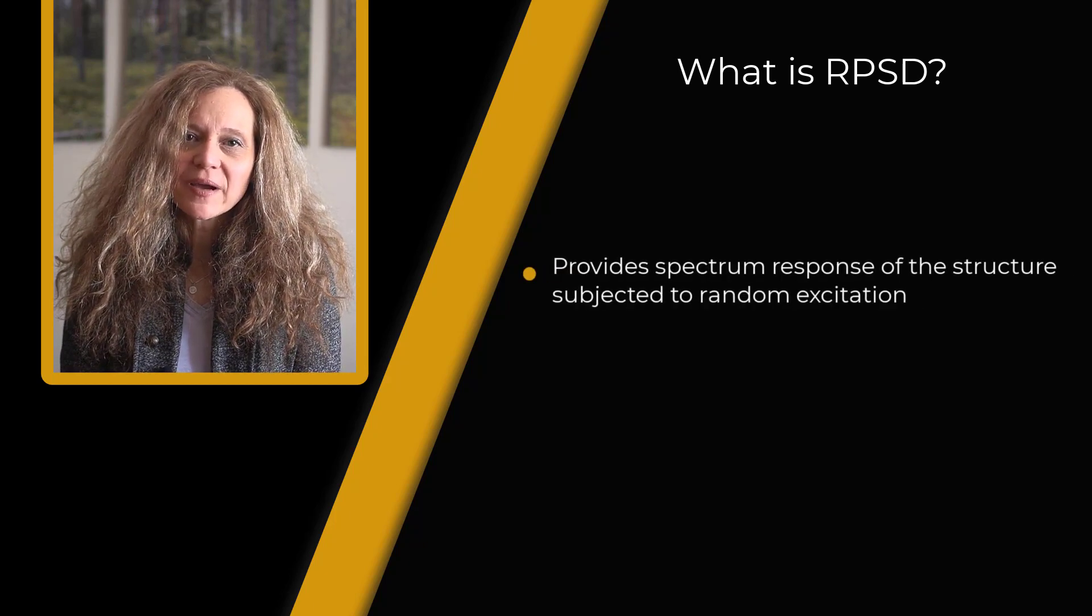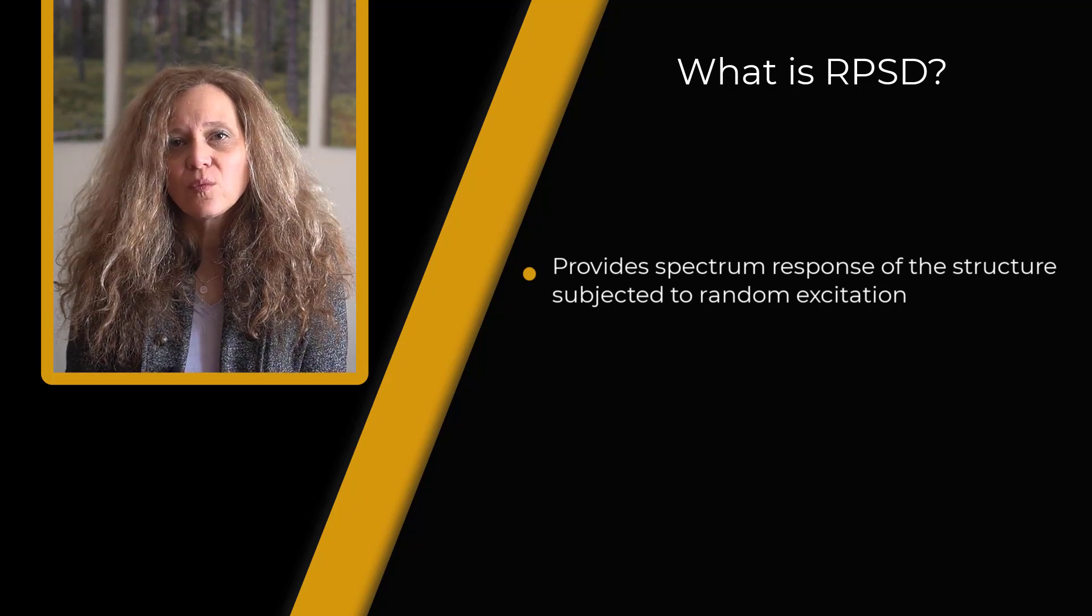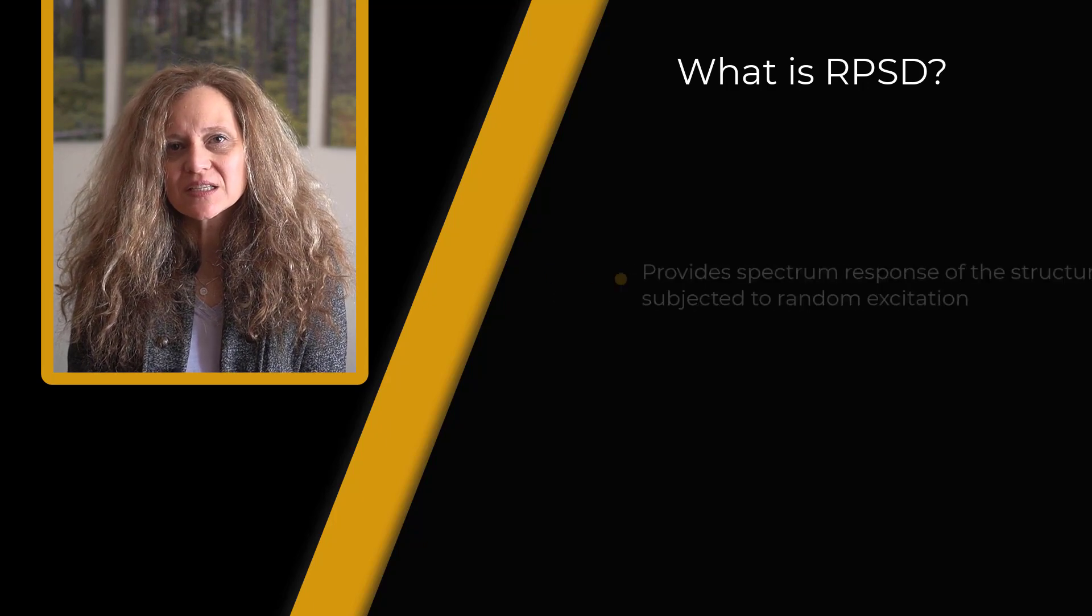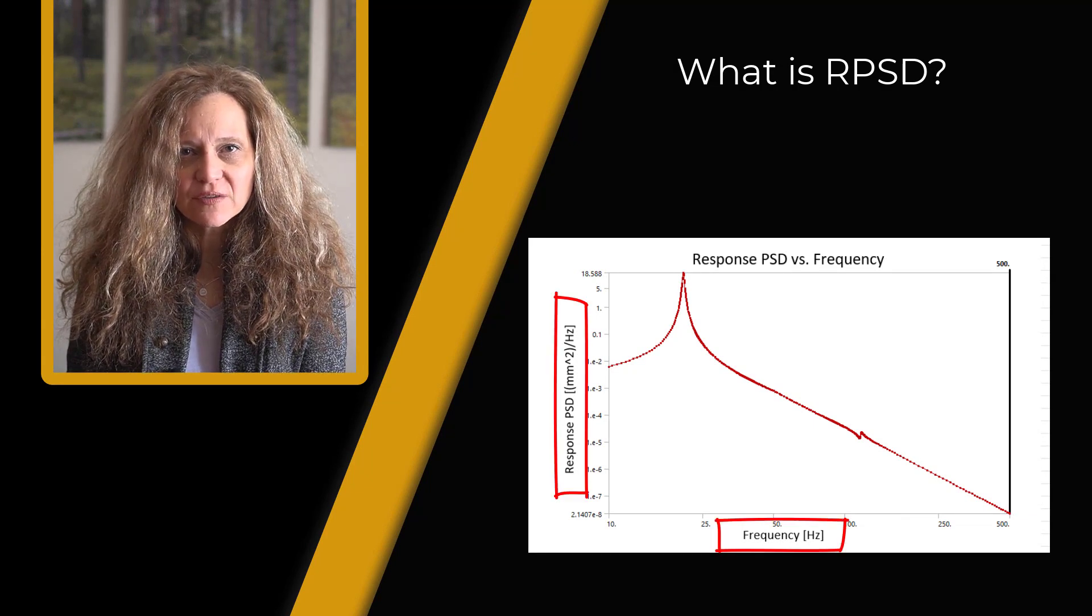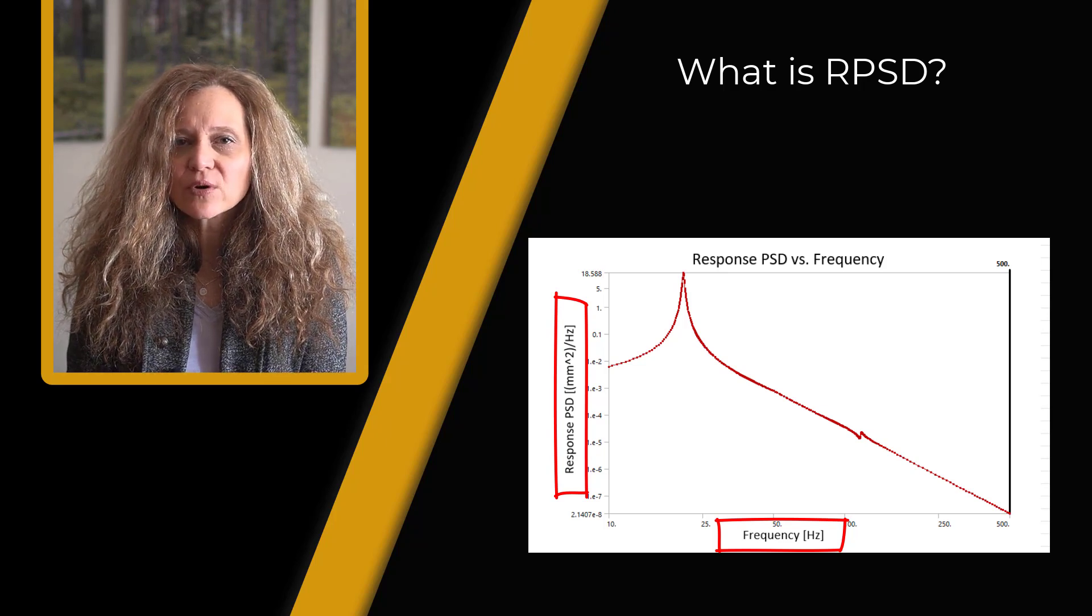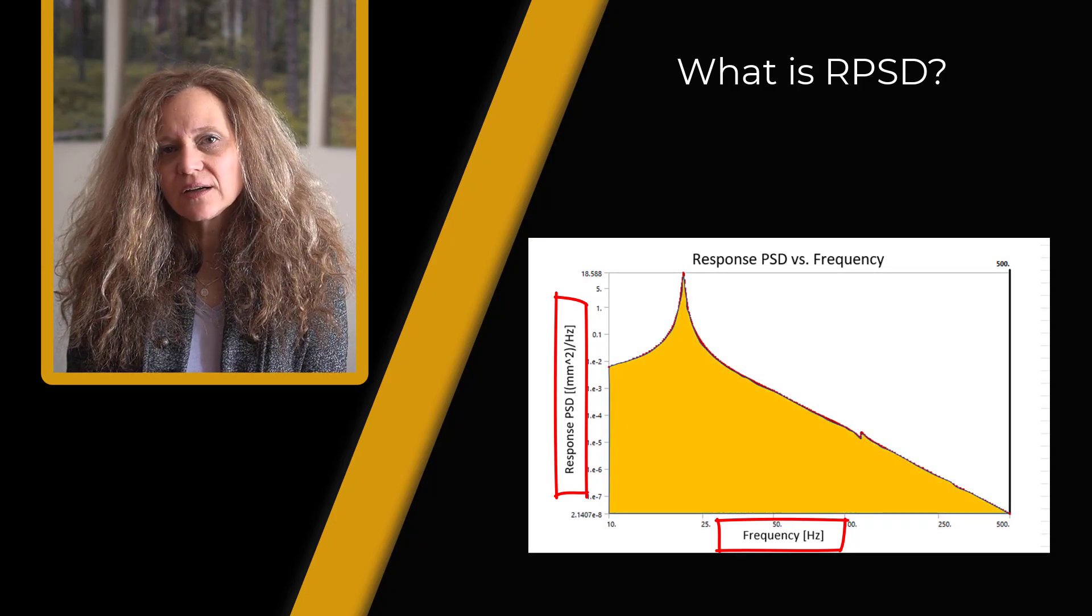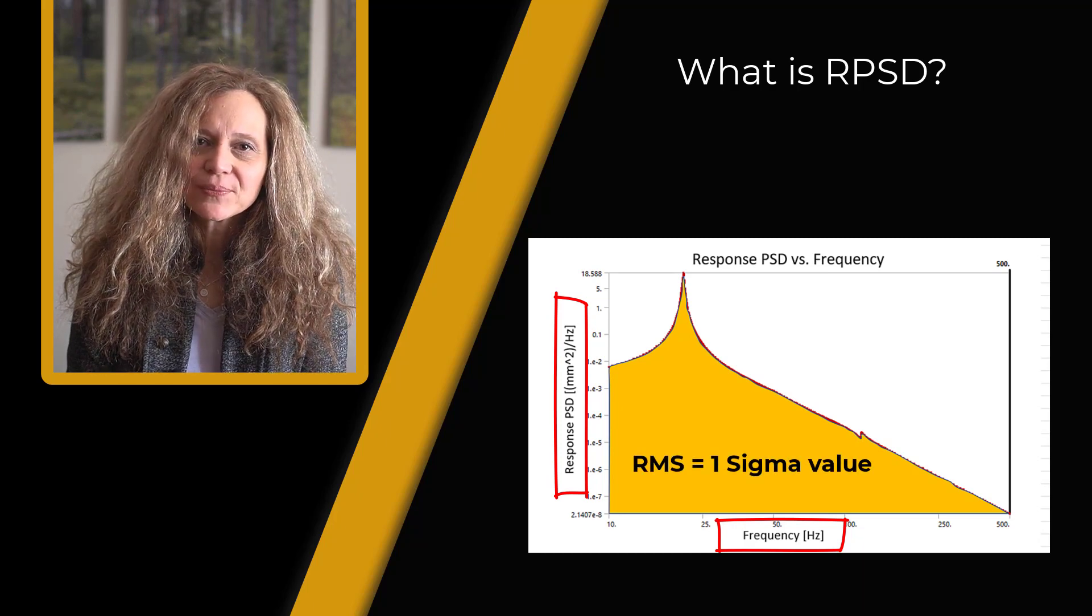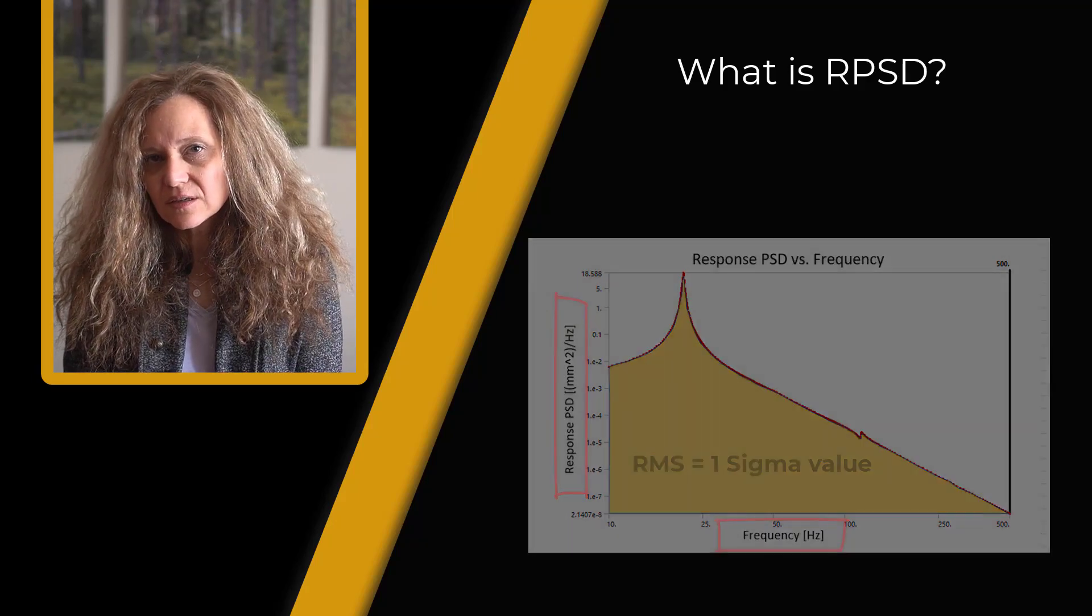Response PSD provides spectrum response of a structural component subjected to random excitation. When a response PSD probe is inserted, then the response PSD is plotted as a square of the spectrum response over the excitation frequency range. The plot provides information as to how the power is distributed as a function of frequency. The square root of the area under the response PSD is the so-called root mean square RMS value. It is one sigma or one standard deviation value in a statistical term.